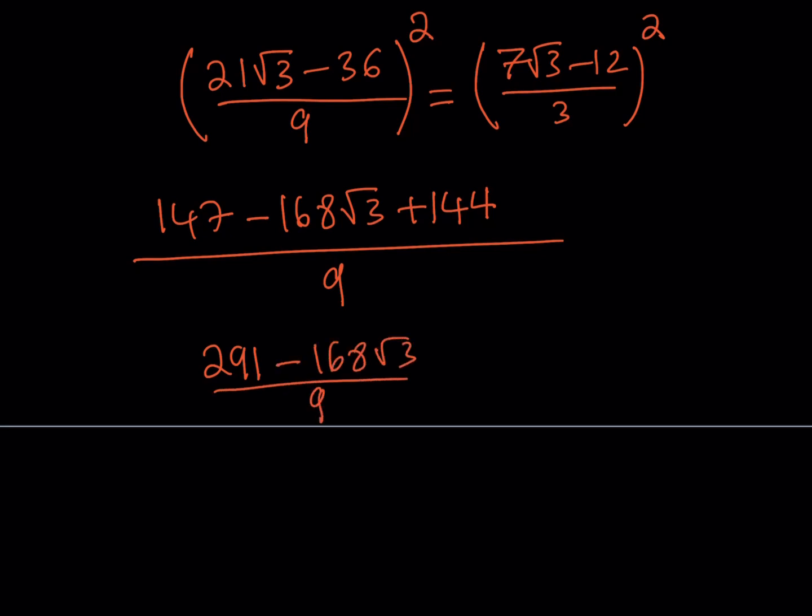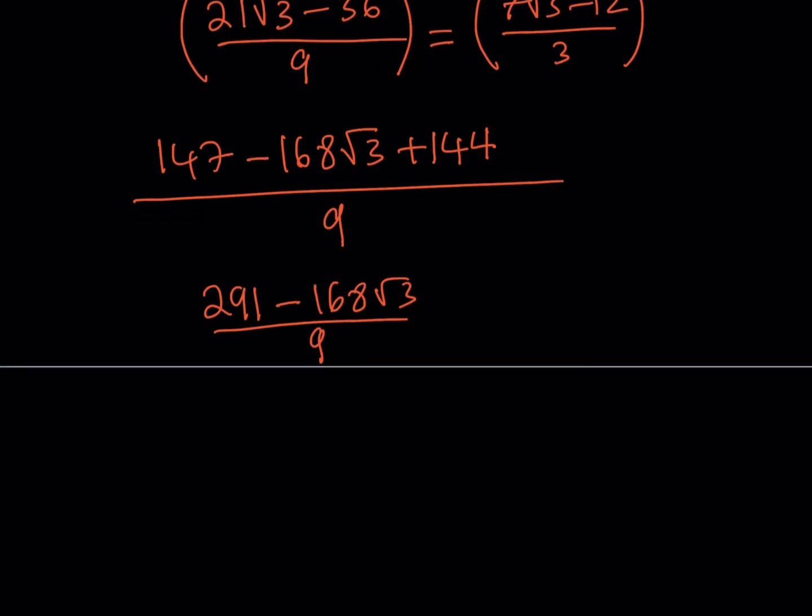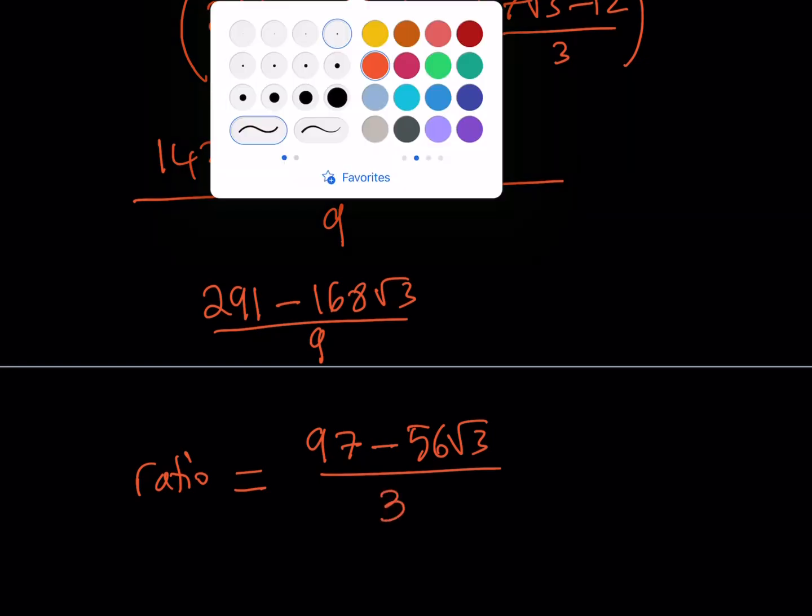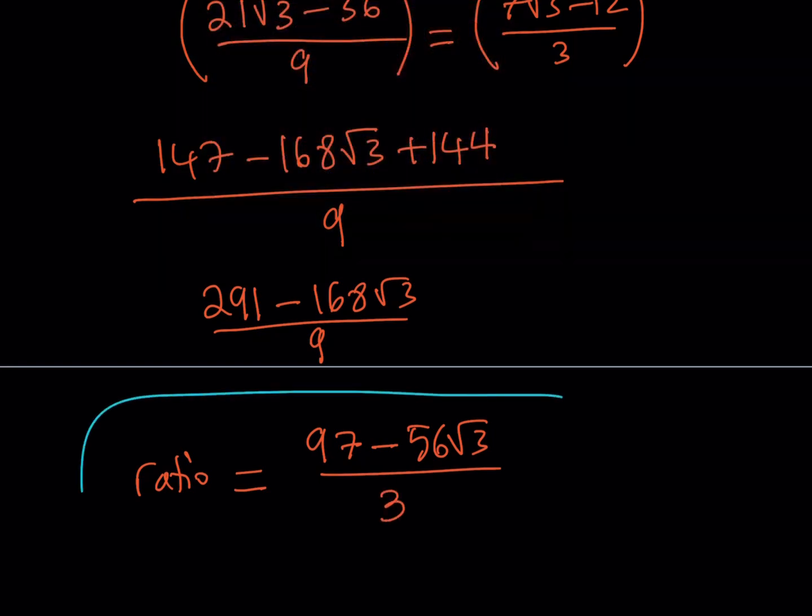And minus 168 root 3 divided by 9. And luckily, all of these numbers are divisible by 3. So we can go ahead and divide everything by 3 and write our ratio in the simplest form. So divide everything by 3. So this should be 97, 168 would be 56 root 3 divided by 3. So basically, this is the ratio I've been looking for.